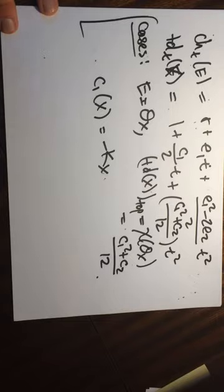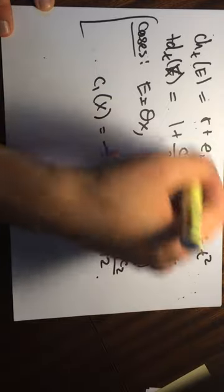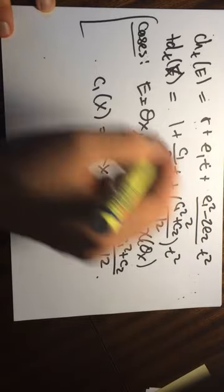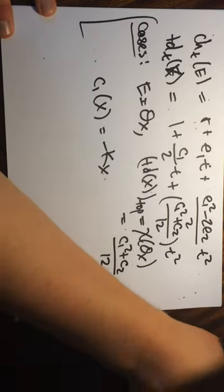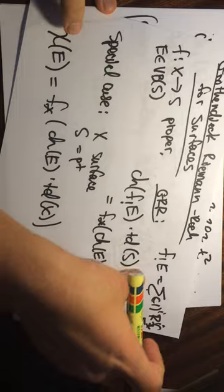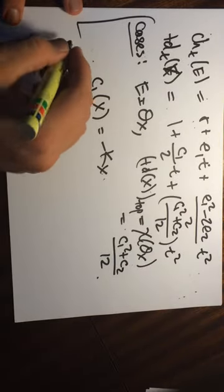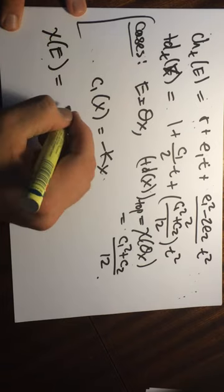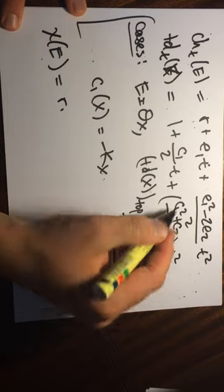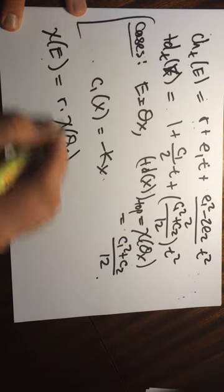So back to the general case. We need to, we'll just need to pair the top things with the, we'll only need to look at the degree two things since we're taking the push forward. So we only need to look at the degree two pieces. So we have chi of E and it's equal to r times, and now we found that this is equal to chi of O of X plus.